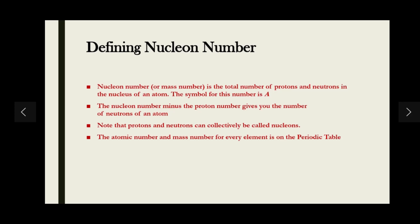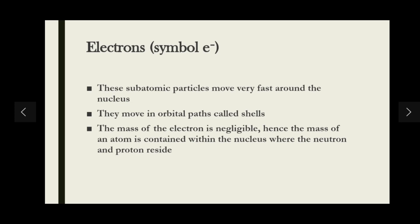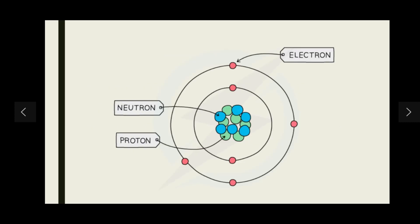Electrons move very fast around the nucleus in orbital paths called shells. Because the mass of the electron is negligible, the mass of an atom is effectively contained within the nucleus, where protons and neutrons reside. So when we talk about mass, we only think about protons and neutrons. You can see in the diagram that protons and neutrons sit at the center in the nucleus, while electrons move randomly in shells.